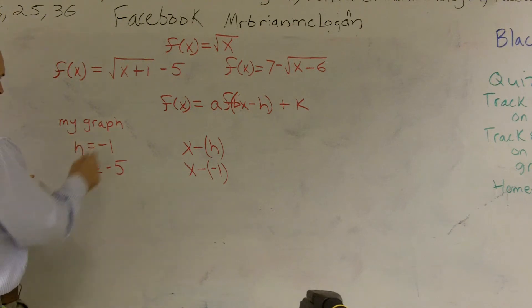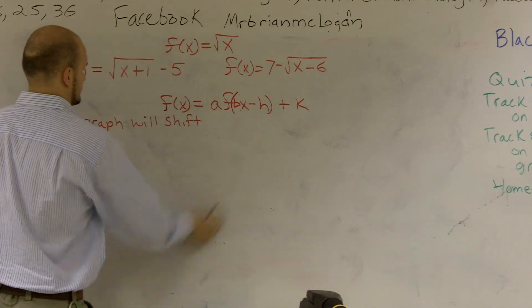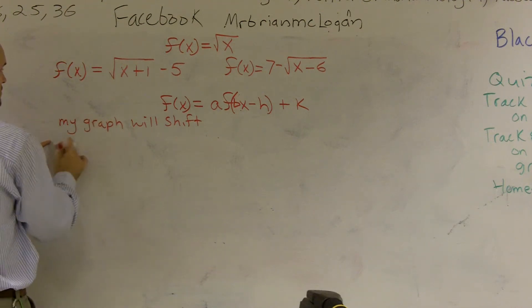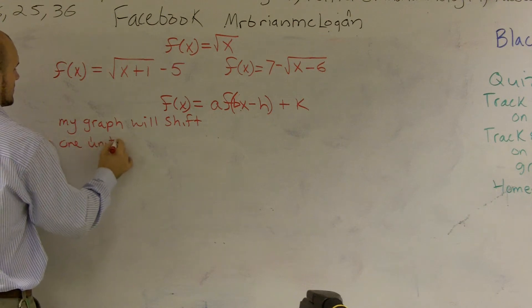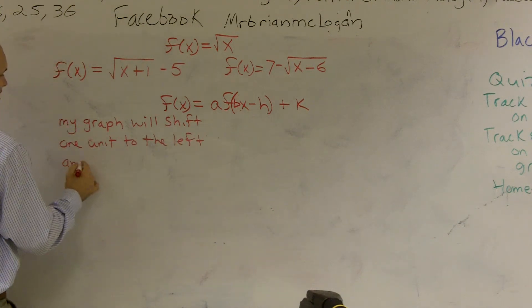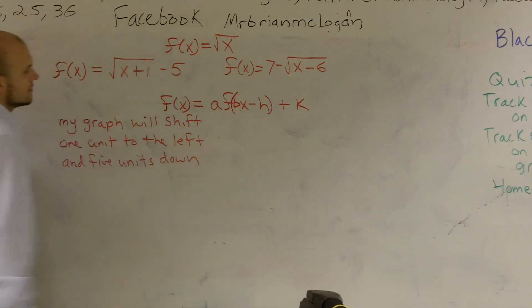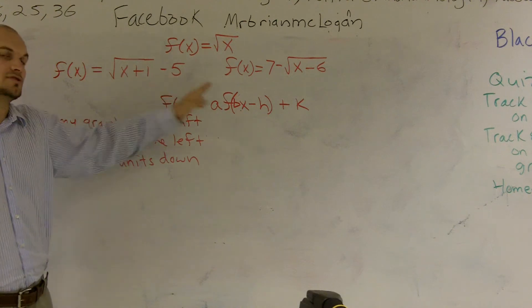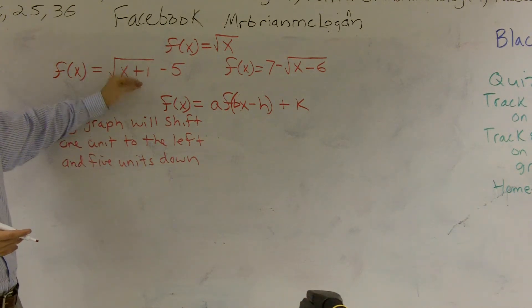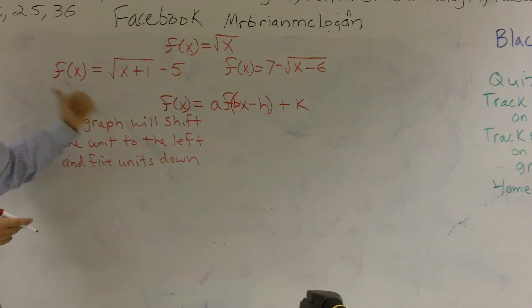When my h is equal to negative 1 and k is negative 5, my graph will shift one unit to the left and five units down. Now, it's very common for students to want to say it goes to the right because it's positive — thinking that to the right is positive. Just remember, when dealing with the inside of the function, it's actually going in the opposite direction. So if it's plus 1, you're shifting one unit to the left.